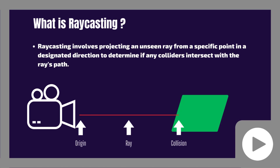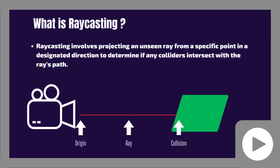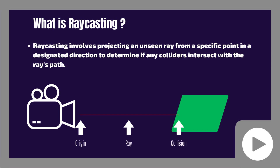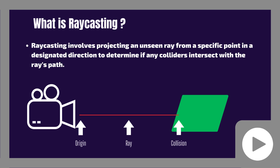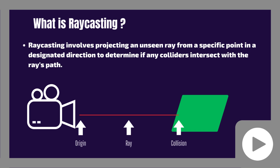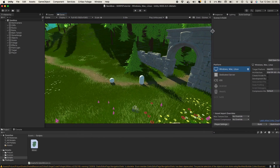In simple terms, raycasting in the context of computer graphics and game development is the process of extending an imaginary line or ray from a specific point in space, usually the camera or a character, in a specific direction to detect whether any object — often referred to as colliders — interacts with this line. This is commonly used for determining line of sight, detecting where a bullet hits in a shooting game, or registering user interaction like selecting or clicking an object. The ray tests for intersections along its path, providing information about what it hits, how far away it is, and other relevant details.